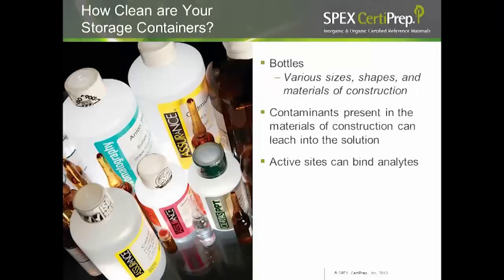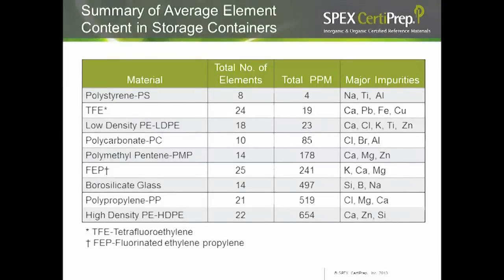Storage containers come in different sizes, shapes, and materials, many of which can pose contamination issues. Glass bottles might have active sites where analytes can bind. Common major metal impurities vary by bottling material: polycarbonate bottles can have chloride, bromide, and aluminum; polystyrene bottles may have sodium, titanium, and aluminum; borosilicate glass bottles would have sodium, boron, and silicate.